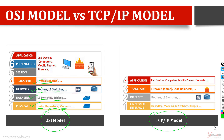Layer 4, the transport layer, covers firewalls. Then the upper layers — the application layer, presentation layer, and session layer — cover all our end devices: computers, mobile phones, firewalls, and all the hosts.